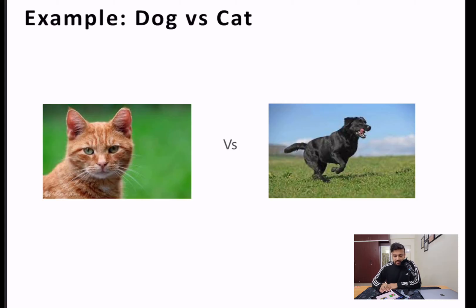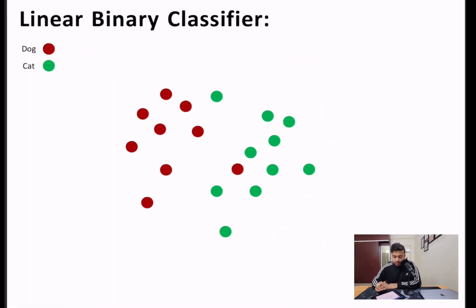Assume we have a dataset of cats and dogs and we want to classify each image as either being a cat or a dog. We will plot that dataset into a 2D plane. Images are high-dimensional datasets and it is difficult to plot them on a 2D plane, but there are techniques to do so. Let us assume we already know that technique and we have plotted our data points — the red points depict images of dogs and green points depict images of cats.